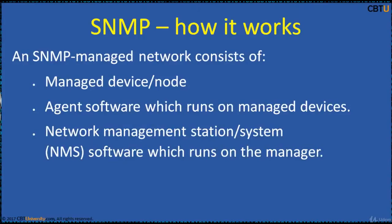SNMP managed network consists of three components: managed device, agent, and network management station. A managed device is a network node that implements an SNMP interface allowing unidirectional (read-only) or bidirectional (read-and-write) access to node-specific information. Managed devices exchange node-specific information with the NMS and can be any type of device including routers, servers, switches, IP telephones, hosts, printers, etc. An agent is software on managed devices which reports information via SNMP to the manager.